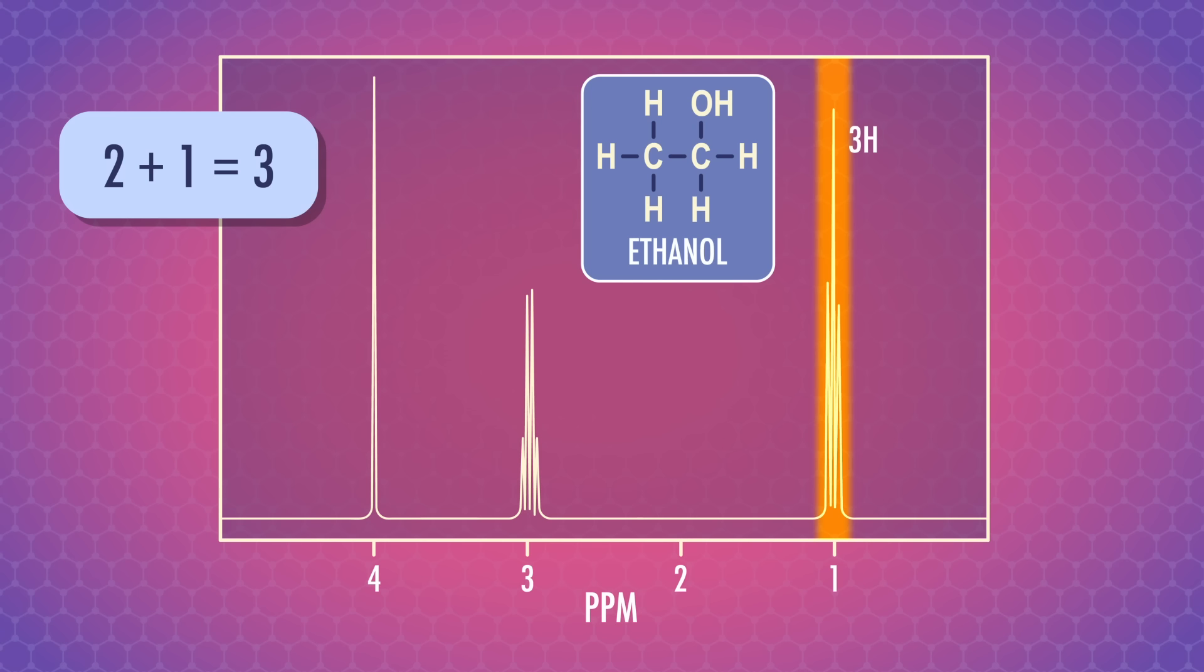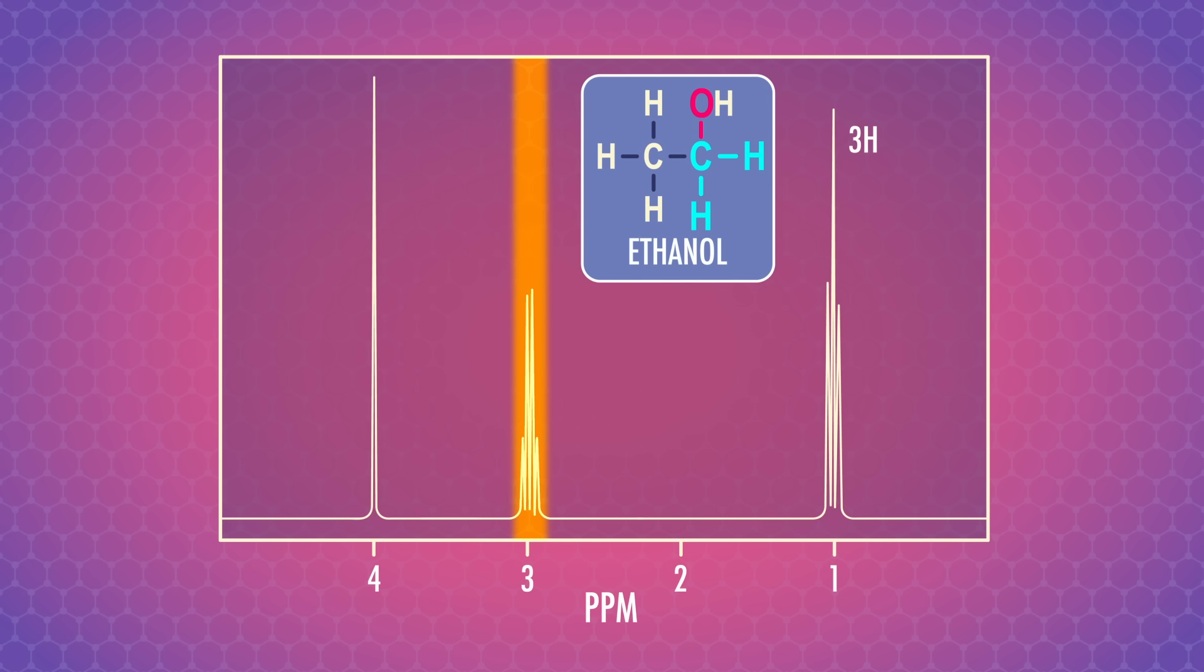Now, going one peak downfield at about 3 ppm, we see the CH2 group in our spectrum. It's downfield of the CH3 because the CH2 group is bonded to an electronegative oxygen atom. In the structure of ethanol, we know that the CH2 group is bonded to the CH3 group. So there are three protons on the neighboring carbon that are coupled, and n is 3. Using the n plus 1 rule, 3 plus 1 equals 4, so the CH2 peak is split into 4. Plus it has an integral of 2, telling us there are two protons.